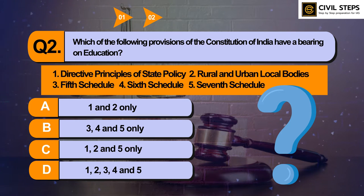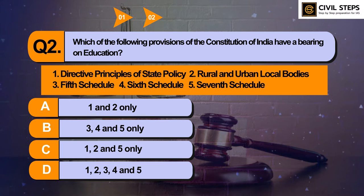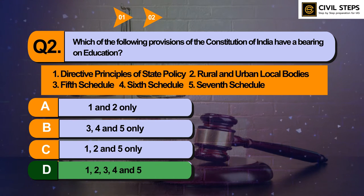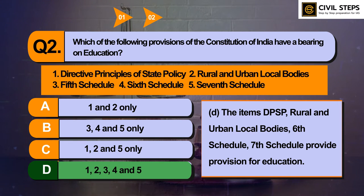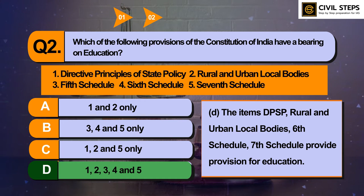The answer of this question is Option D: 1, 2, 3, 4 and 5. The items — Directive Principles of State Policy, Rural and Urban Local Bodies, Sixth Schedule, and Seventh Schedule — provide provisions for education. You should know what is under the Fifth Schedule, Sixth Schedule, and Seventh Schedule. These important schedules are something you should be well aware of.